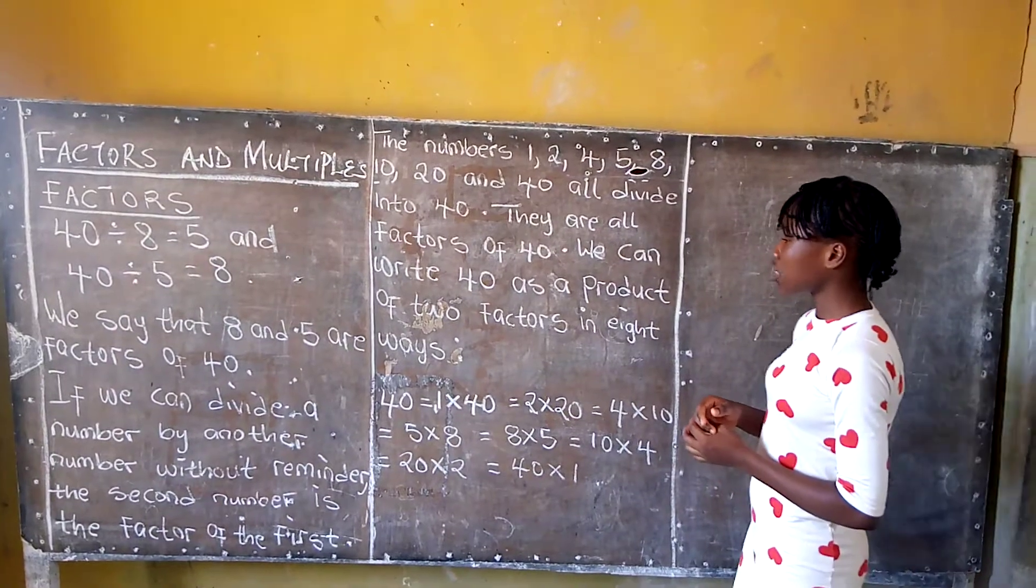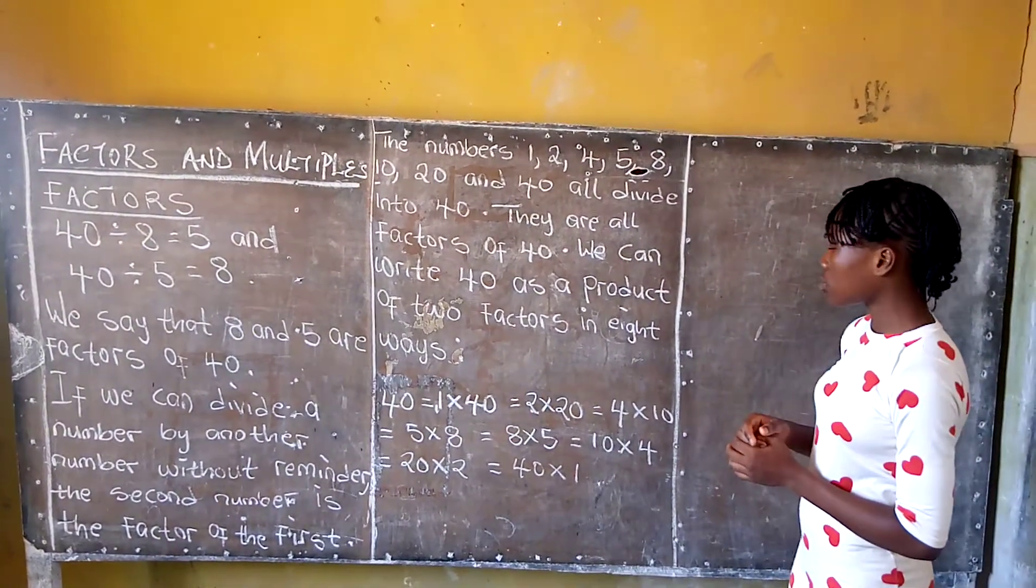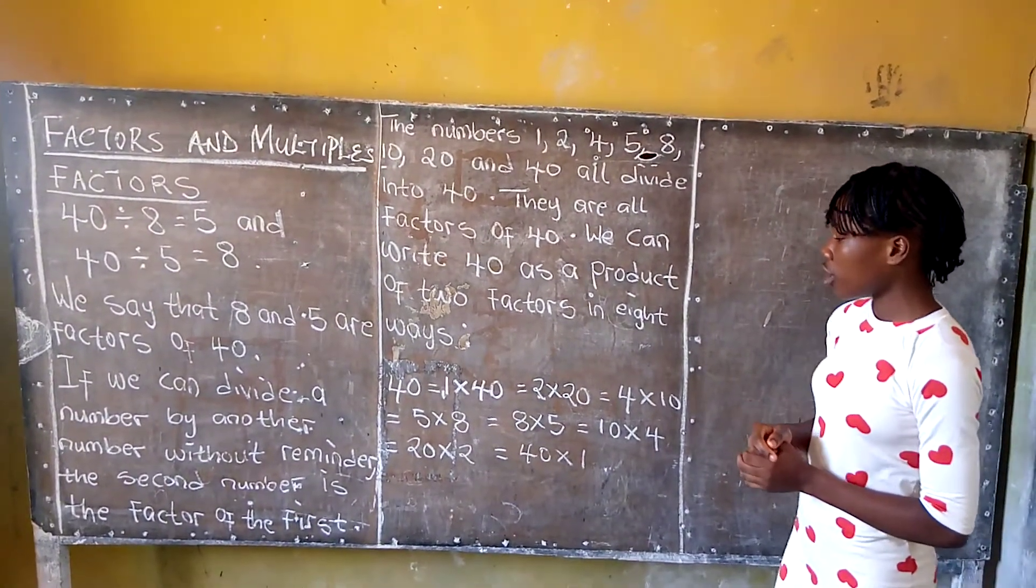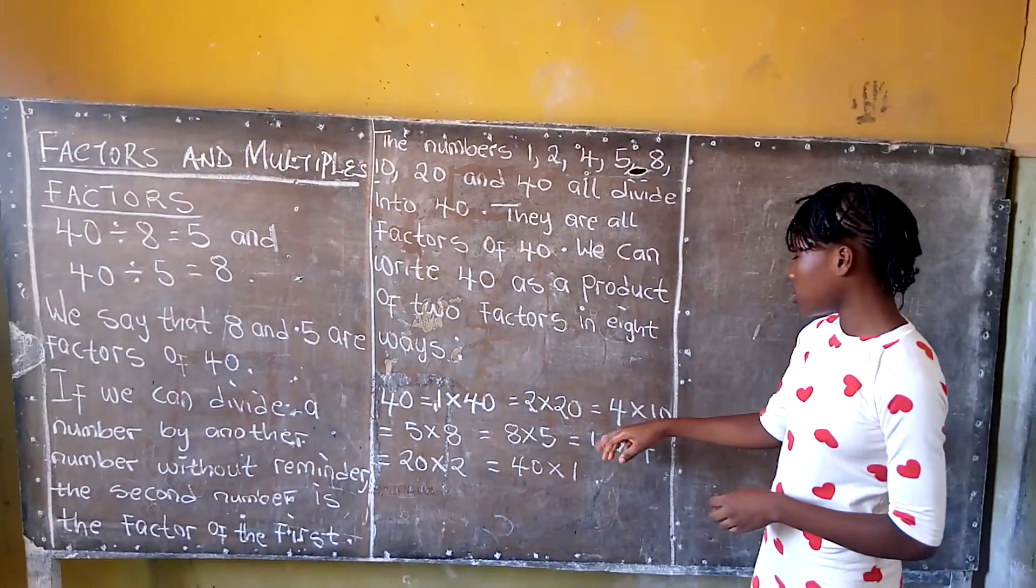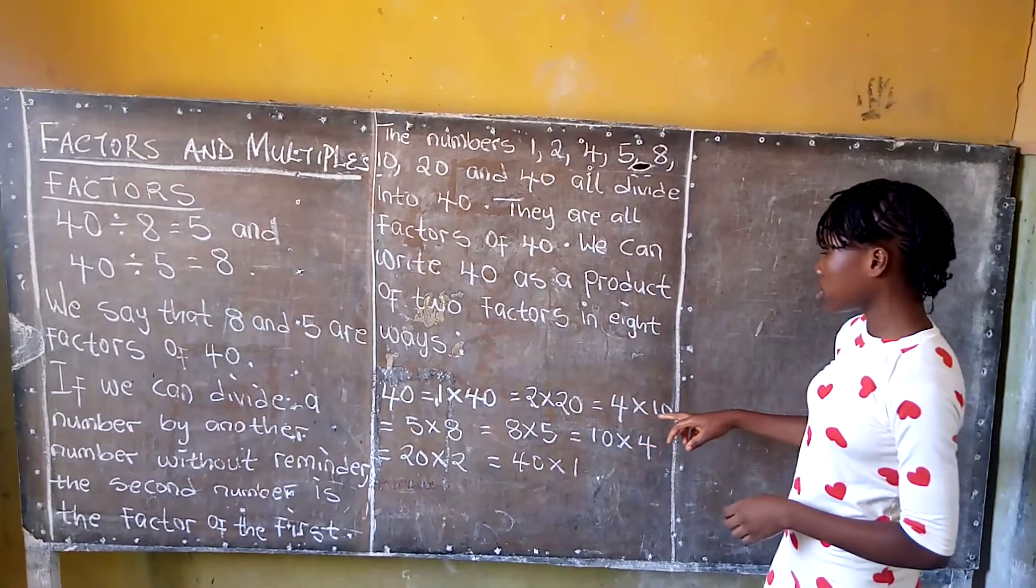We can write 40 as a product of two factors in 8 ways, which are: 40 equals to 1 times 40, equals to 2 times 20, equals to 4 times 10.